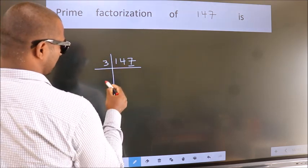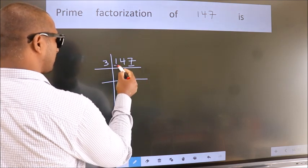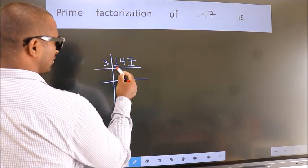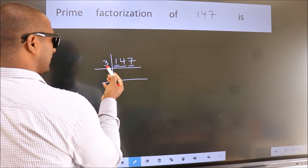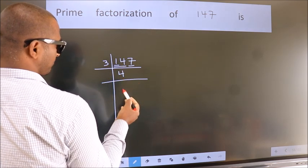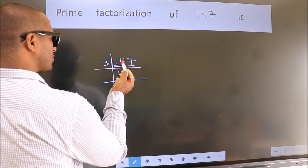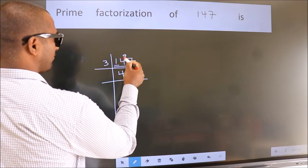So take 3. First number 1 is smaller than 3. So take 2 numbers, 14. A number close to 14 in the 3 table is 3 times 4 equals 12. 14 minus 12 is 2, carry forward 2 to get 27.